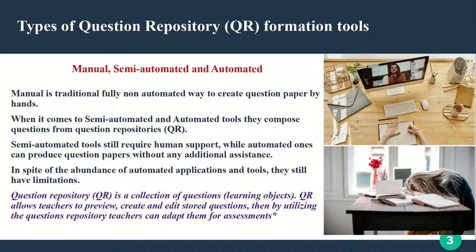These types of applications can be classified as manual, semi-automated, and automated. Manual is the traditional, fully non-automated way to create question papers — the most time-consuming and tedious, but you don't need anything special to create them. Semi-automated tools still require human support, and as the name suggests, automated tools can produce question papers without any additional assistance. But in spite of the abundance of automated applications and tools, there are still limitations.